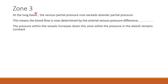Now we come to the last zone, Zone 3, which is commonly found at the lung base. Here we are at the bottom of the lung where gravity is higher, and because of this the pressure in the vessels has increased further down. The venous partial pressure now exceeds the alveolar partial pressure.